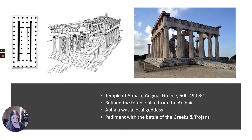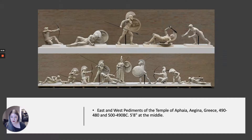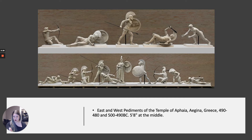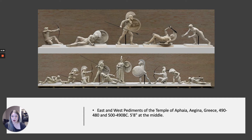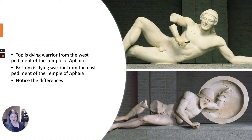A lot of these temples no longer have their sculptures from the frieze, entablature, or pediment — they were taken away and many are in museums now. We'll talk about some of those incidents later. These are the east and west pediments of the Temple of Aphaea, and what I really like about this is it's a literal bridge between the archaic and classical periods of sculpture, because they were made about ten years apart from each other during this transition.